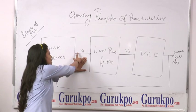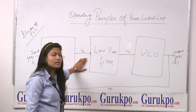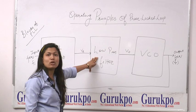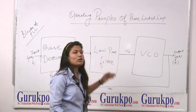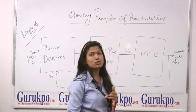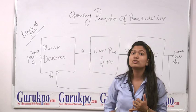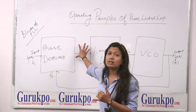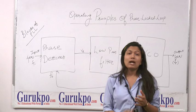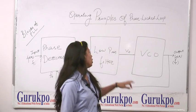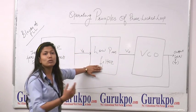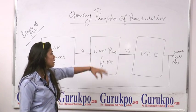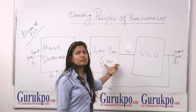The error voltage is the input to the Low Pass Filter. The working of the Low Pass Filter is to attenuate the high frequency components of the error voltage.